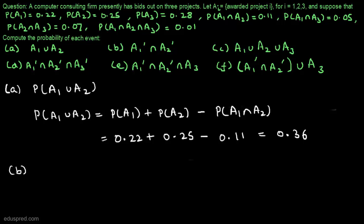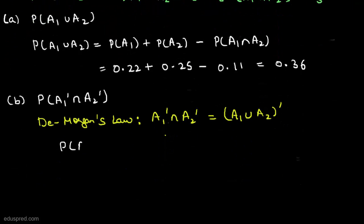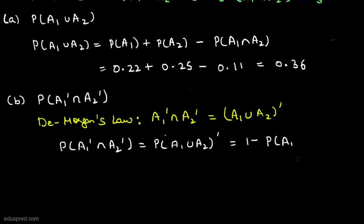In part B, we have to calculate the probability of the event A1 complement intersection A2 complement. We can use De Morgan's law, which tells us that A1' ∩ A2' = (A1 ∪ A2)'. So P(A1' ∩ A2') = P((A1 ∪ A2)') = 1 − P(A1 ∪ A2). From part A, we know that probability is 0.36, so solving this we get 0.64.